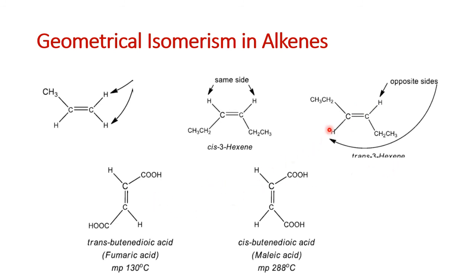Another example is butenedioic acid, which exists in two forms: cis and trans, with very different melting points. When the two carboxyl groups are on the opposite side, it is trans-butenedioic acid, called fumaric acid. When the two hydrogens are on the same side, that is called maleic acid. Their melting points are totally different: 28°C for maleic acid and 130°C for fumaric acid. For geometrical isomerism, the necessary condition is that the groups attached to each double-bonded carbon should be different, giving cis and trans forms.